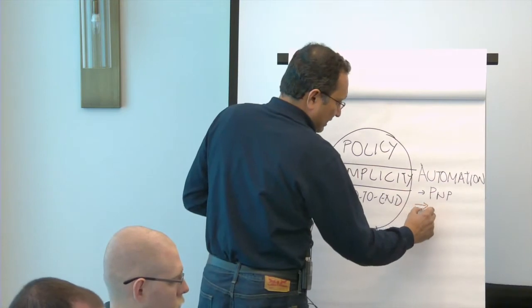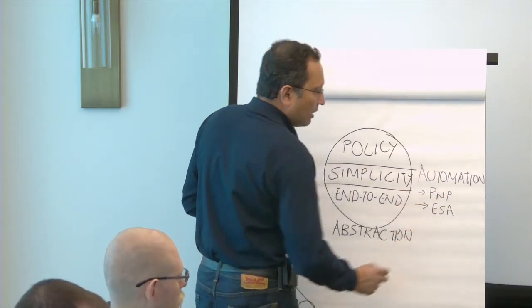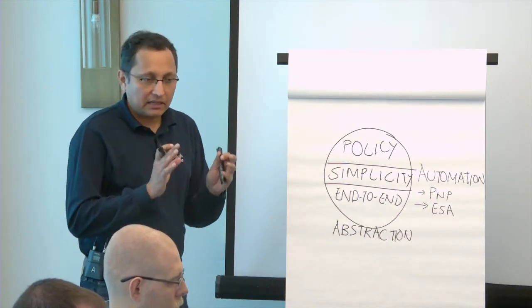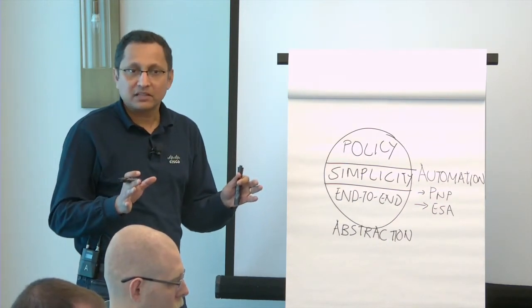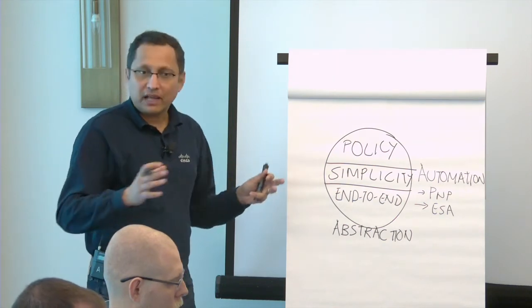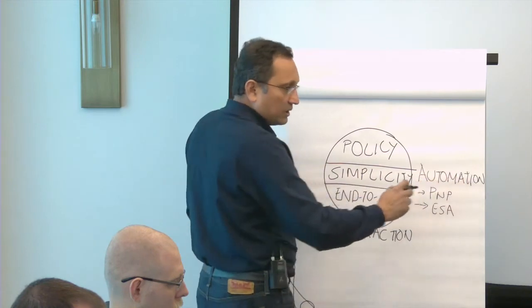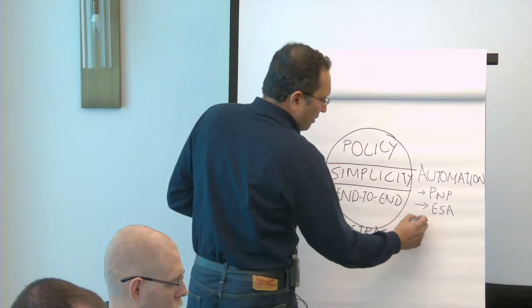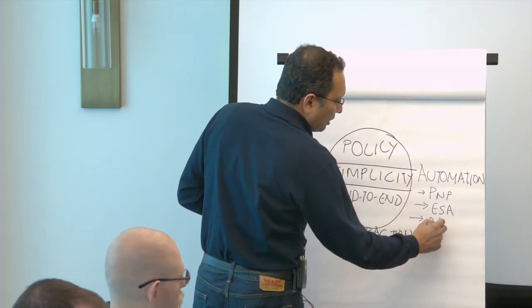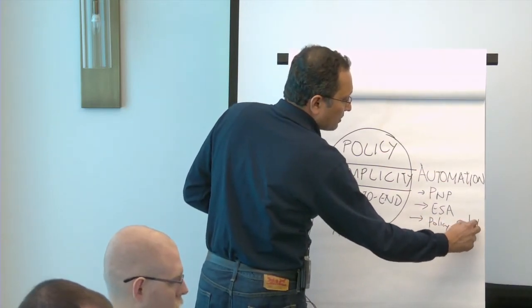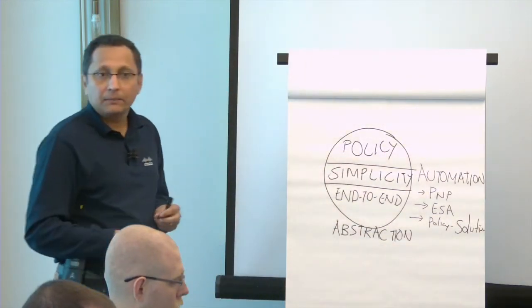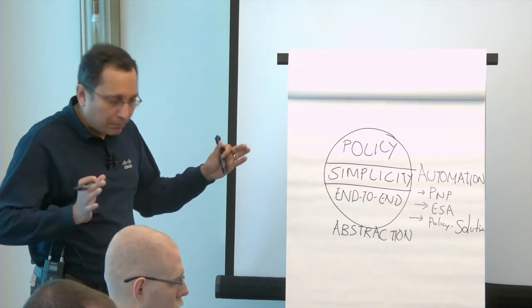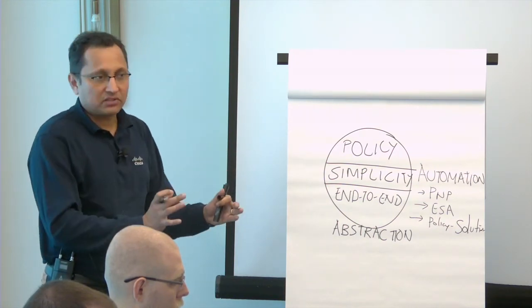The second part is we are scaling this with something we call ESA, which is being demonstrated on the show floor. So this is Enterprise Service Automation. And this allows the templatization of, let's say, your site profiles of how you would look, a branch or a campus to look like. And then using PNP, using automation, and really being able to push that out at scale across hundreds of thousands of those. And then the last part is really the using of policy for all of the solutions that we have. And this could be IWAN, this could be things that we're doing on the access side. And these are all core to really bringing that OPEX down, making it faster and simpler to deploy.